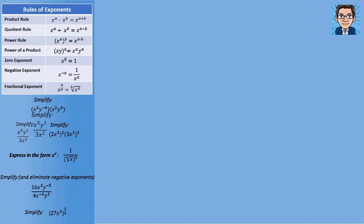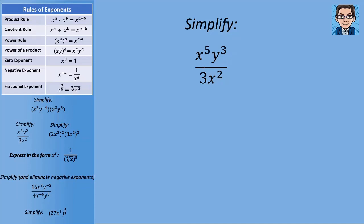The next problem asks us to simplify a division. The only y is y to the 3rd, so we don't have to do anything with that. Notice the 3 is on the bottom, so the final answer is going to have 1/3 in it — you can put a 1 up top to make that clearer. For the x's, we've got x to the 5th and x squared being divided, so we subtract exponents: 5 minus 2 gives us 3. The y is unchanged. So we get (1/3)x to the 3rd times y to the 3rd.